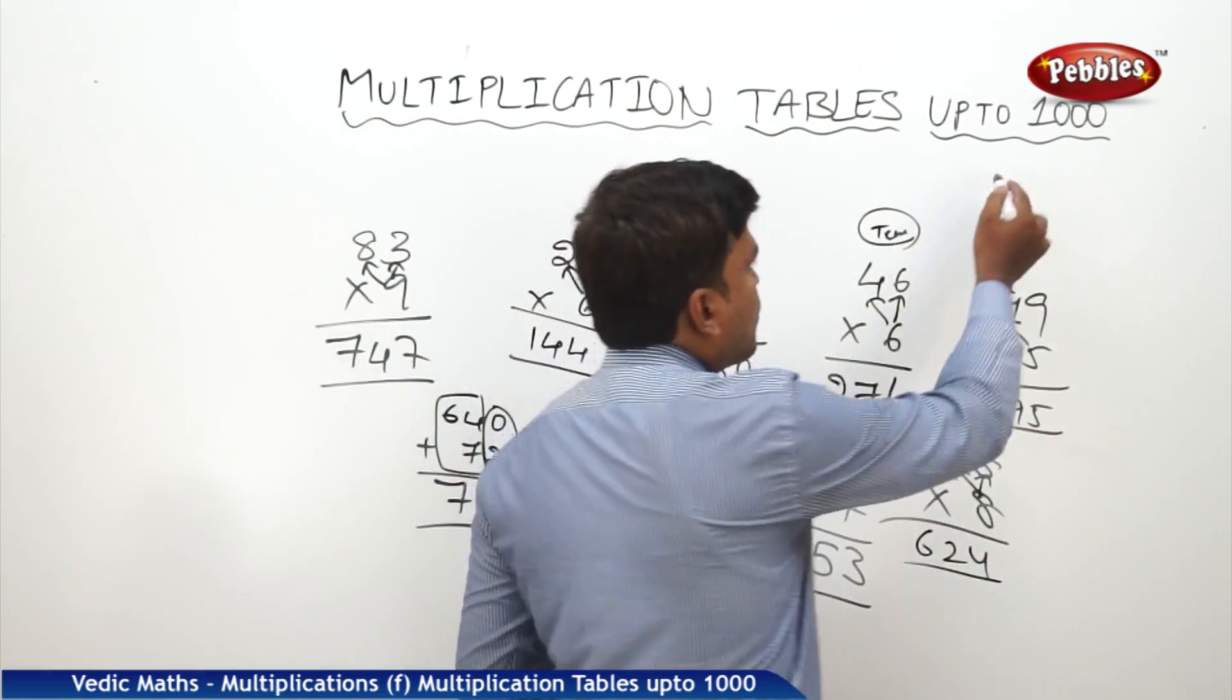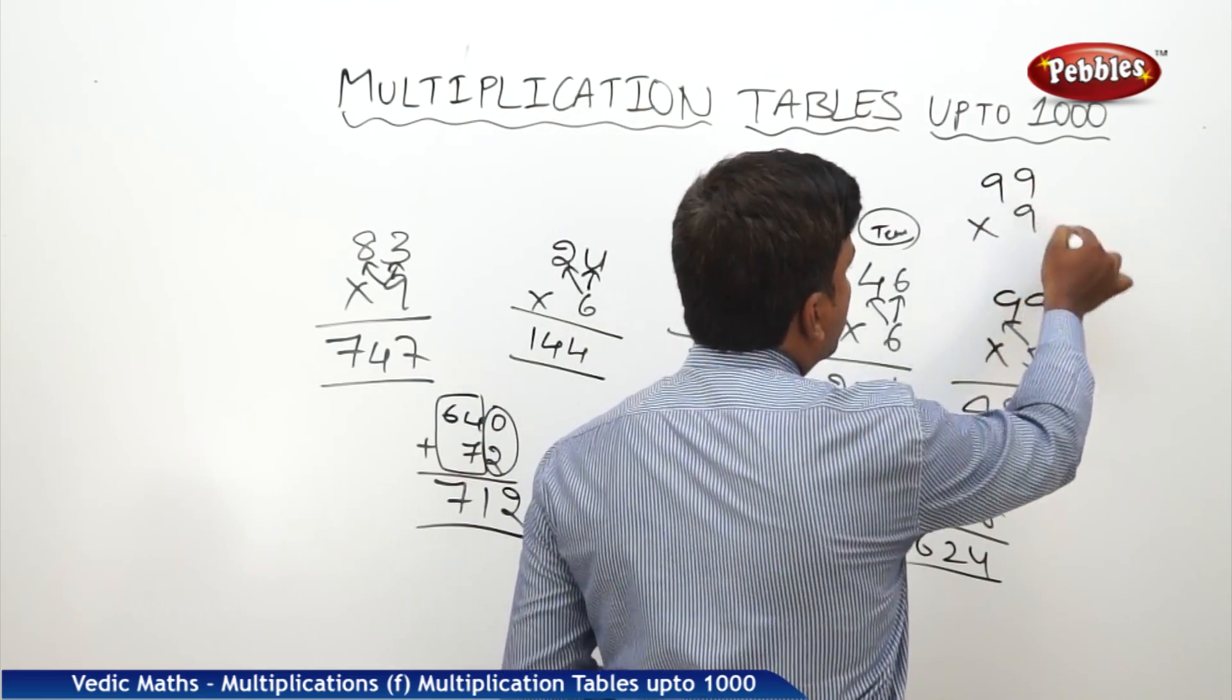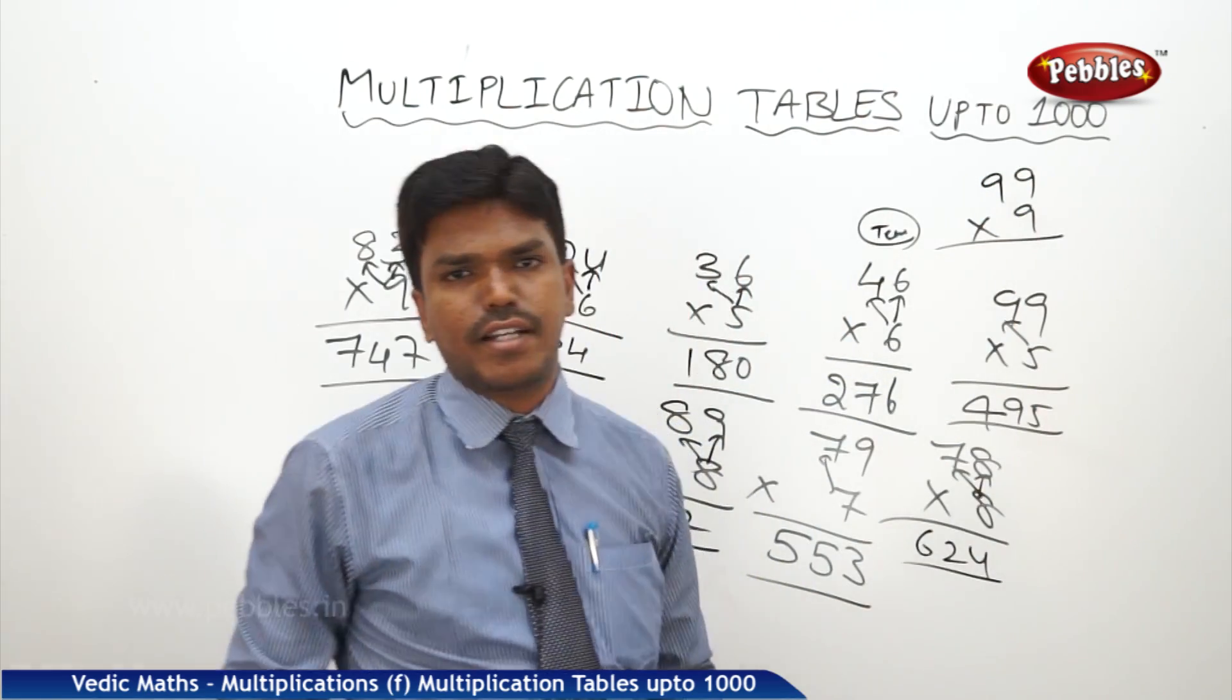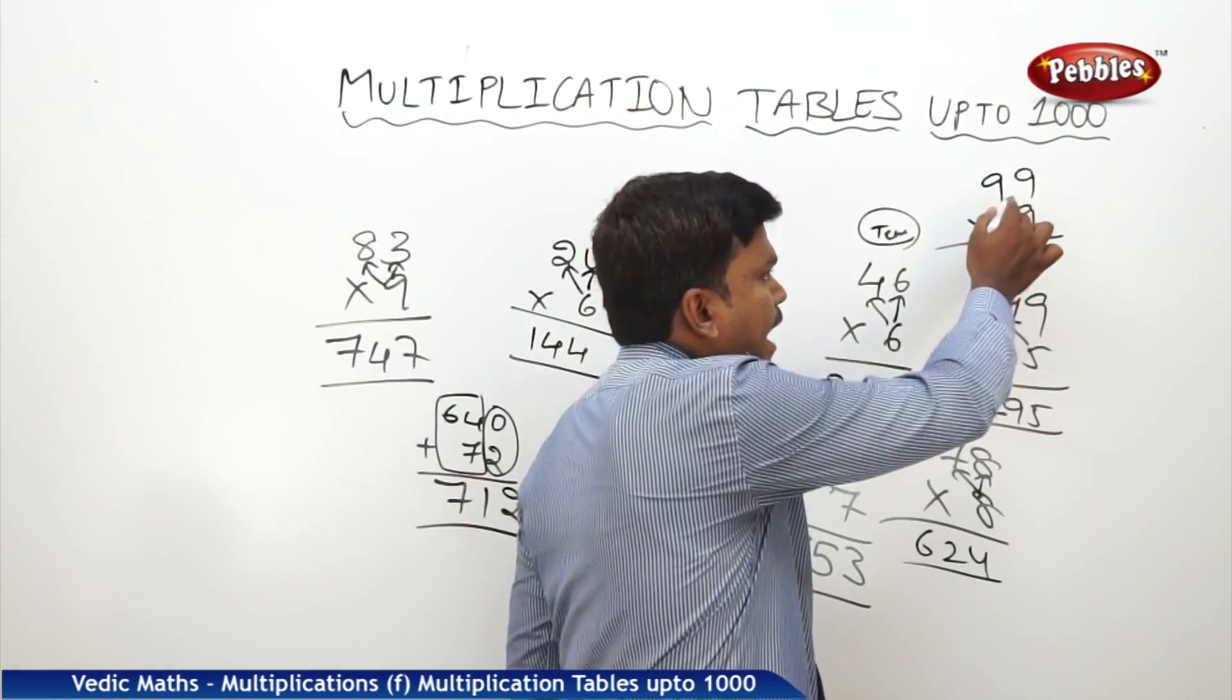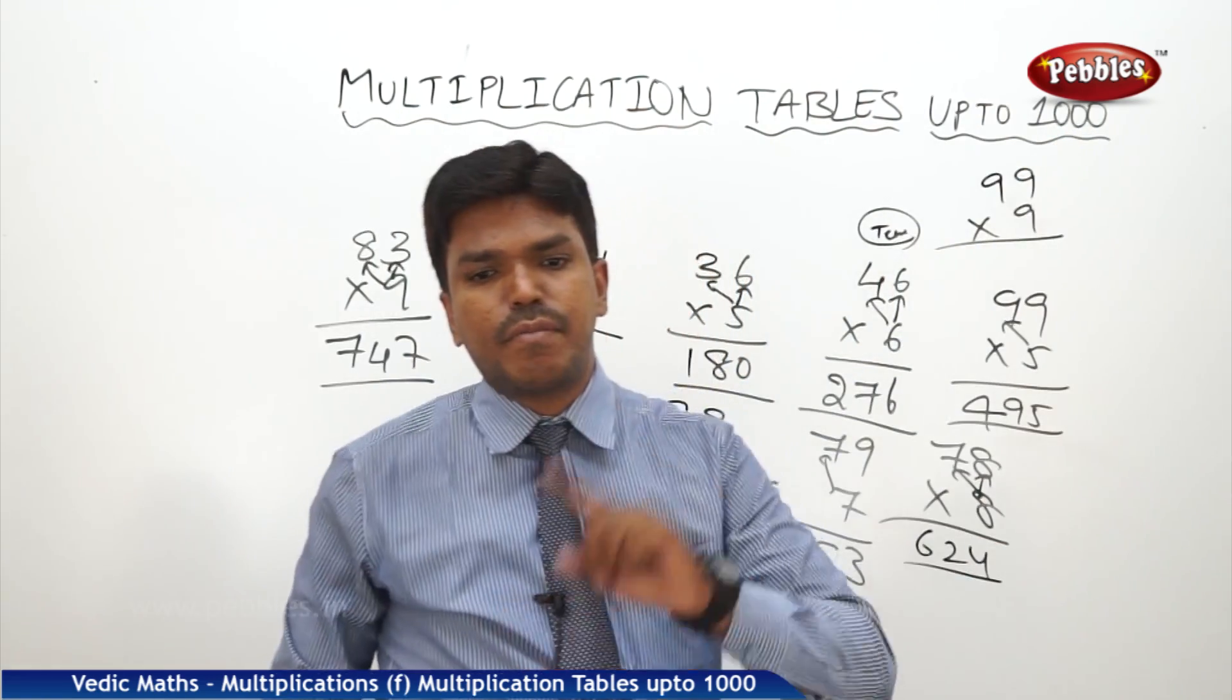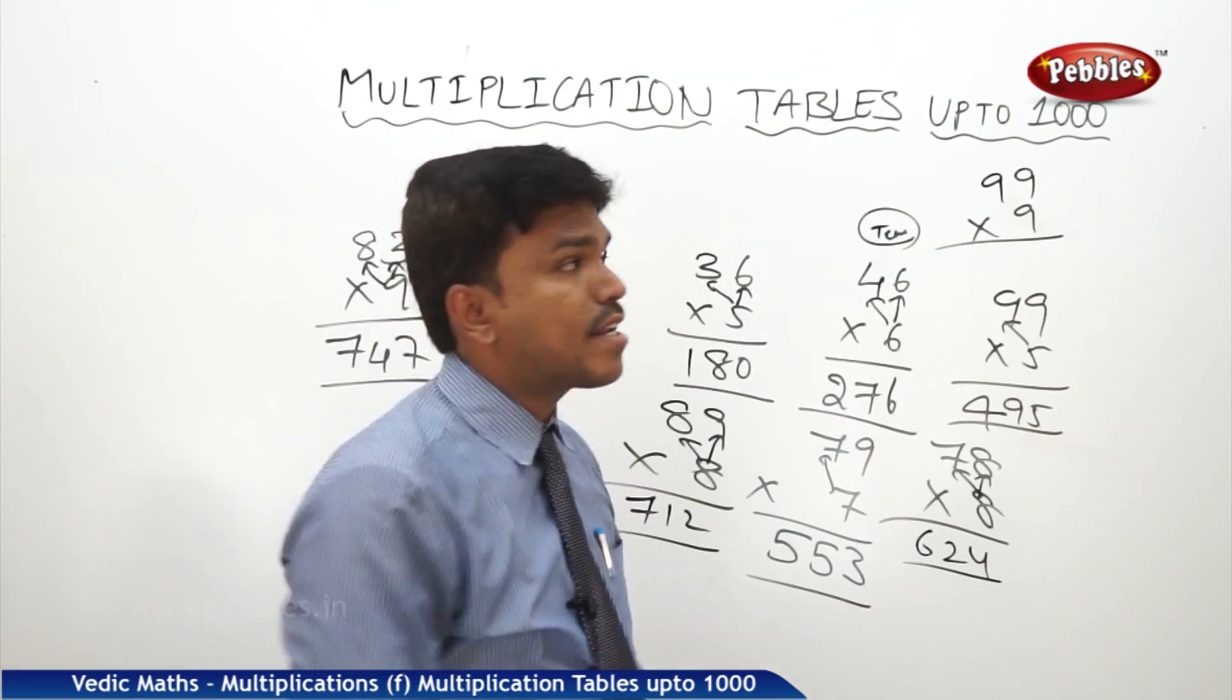Similarly you tell me what is 99 nine times. Exactly 810 plus 81. 810 plus 81 is how much? 891.